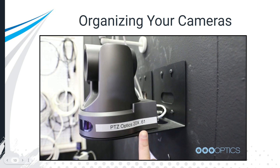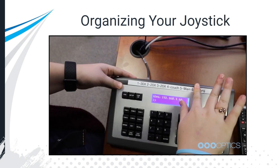Another big tip: organize your cameras with a label maker. When you set the IP address, label it — because you'll want to go back and reference it. Sometimes you open your Google Sheet, but other times you just want to peek at the camera and see the IP address right there on the side. You can also label your joystick — camera one is 30x, camera two is 20x, camera three is 30x — that helps you organize your cameras.